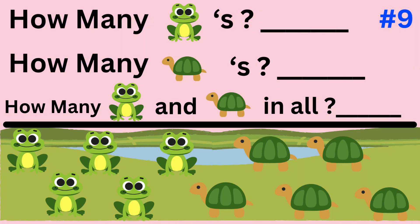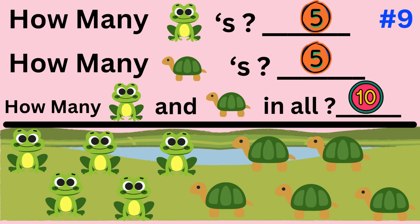Word problem number nine. The word problem asks how many frogs are there, how many turtles are there, then how many frogs and turtles in all? Work the problem and then we will review together. The answer is five frogs and five turtles, so there are ten frogs and turtles in all.